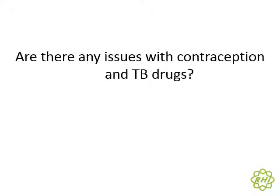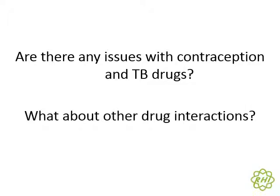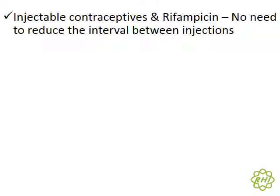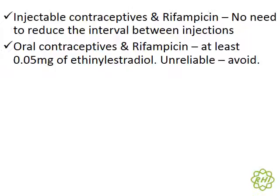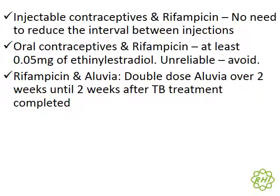We also need to think about contraception and helping Denio time her family, and look at other possible drug interactions. Injectable contraceptives are probably still one of our best options apart from the IUCD with TB treatment. With rifampicin, it has been confirmed there is no need to reduce the interval between injections, and patients can stay on their normal Depo-Provera or Nur-Isterate. Oral contraceptives are not a great option with rifampicin — you have to use high doses of ethinyl estradiol and it is unreliable, so we tend to avoid those during TB treatment.